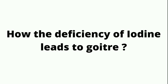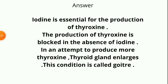Next question: How does the deficiency of iodine lead to goiter? Answer: Iodine is essential for the production of thyroxin. The production of thyroxin is blocked in the absence of iodine. In an attempt to produce more thyroxin, the thyroid gland enlarges. This condition is called goiter.